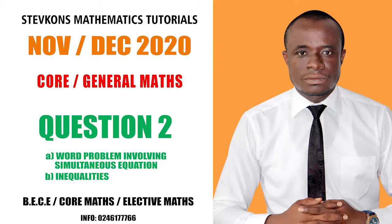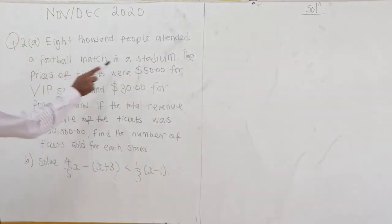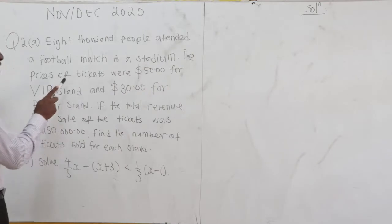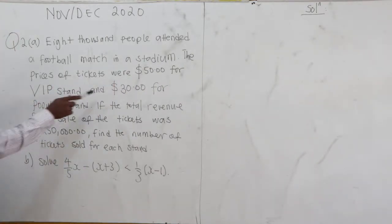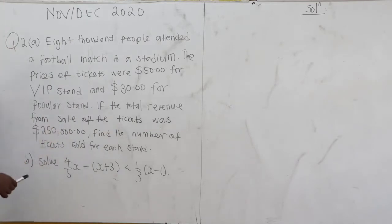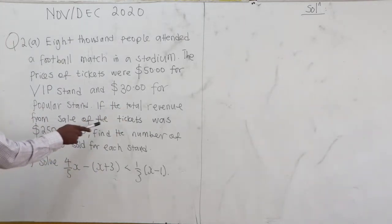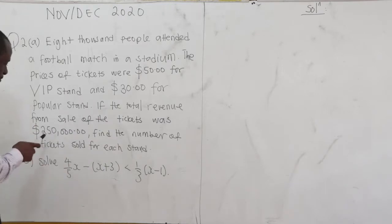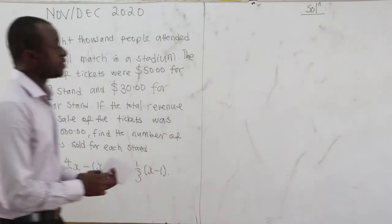What's in NOVDEK 2020 Core Mathematics, question number 2A. 8,000 people attended a football match in a stadium. The prices of tickets were $50 for the VIP stand and $30 for the popular stand. If the total revenue from the sale of the tickets was $250,000, find the number of tickets sold for each stand.